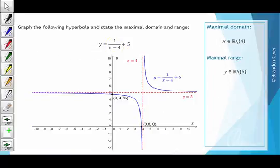On this slide we've just got a computer to generate a graph of this hyperbola. You can see the vertical asymptote at x equals 4 and the horizontal asymptote at y equals 5, then the two intercepts—the y axis at 4.75 and the x axis at 3.8. And over here we've restated the maximal domain and range for this function.